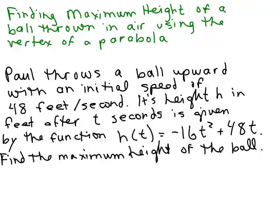In this video, we're going to do a problem where someone throws a ball up in the air and we know the initial speed of the ball. In this case, it's going to be 48 feet per second and we're going to try to figure out how high the ball goes before it starts coming down again.